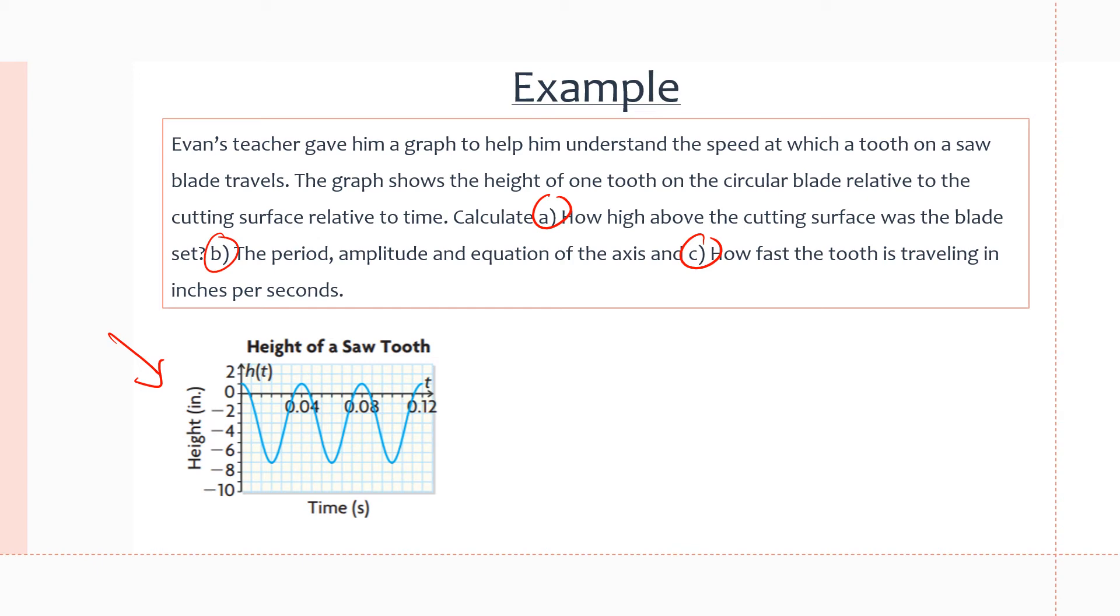For part A, how high above the cutting surface was the blade set? We have to see at the beginning of the graph how high above the cutting surface it was set. The cutting surface in this scenario is right at the x-axis. The blade starts one inch above this cutting surface because we are at y equals one when we start off in the graph at time equals zero. So at time equals zero, the cutting blade is set at a height of one inch.